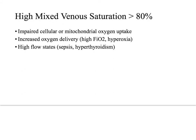A high mixed venous sat is defined as greater than 80%. This may be seen with impaired cellular or mitochondrial oxygen uptake, with increased oxygen delivery such as in a patient receiving too much FiO2, or in high-flow states such as sepsis or hyperthyroidism. Occasionally it can be seen in patients who are brain dead, where the brain is no longer able to extract oxygen.